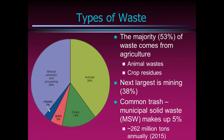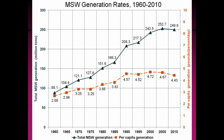If we look at MSW and how much we generate per year, back in 1960 we were generating just a little over two and a half pounds per person per day and 88 million tons every year. Our total waste has increased dramatically, and our per capita waste has also increased. We were up to about 4.72 pounds around 2000, dipped a little, but we've pretty much increased waste generation as we've gone along.